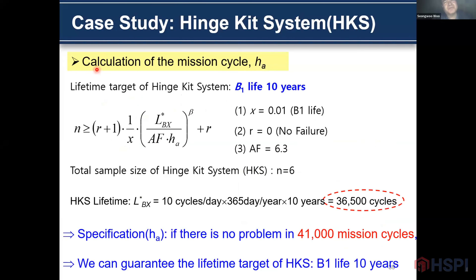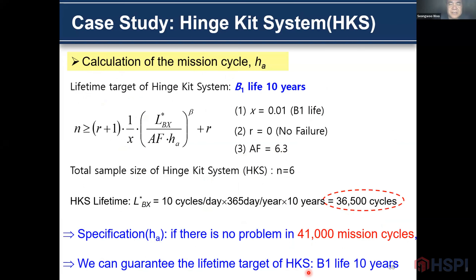I will explain how to calculate the mission cycles. The life target of the hinge kit system is beyond 10 years. The ALT factor is 6.3. The total sample size of the hinge kit system is 6. The kit system life target for 10 years is almost 36,000 cycles. There is no problem at 41,000 mission cycles. We can guarantee the life target of the hinge kit system beyond 10 years.